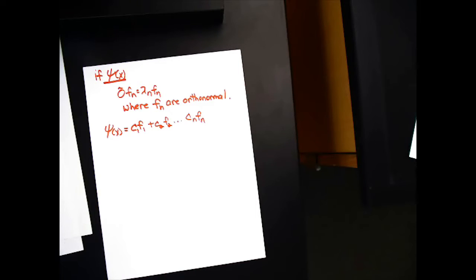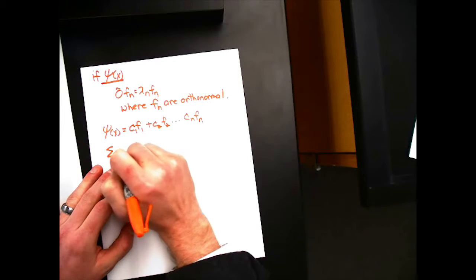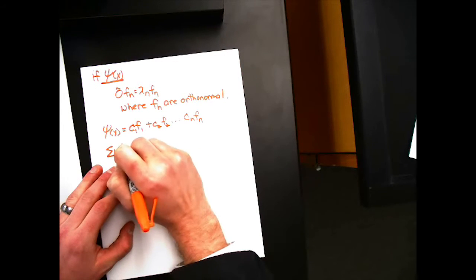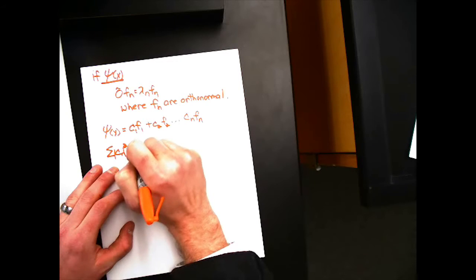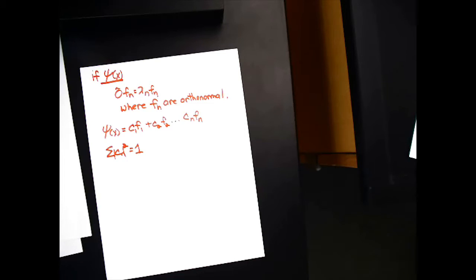There are two things to point out about this. One, the sum of all c sub n magnitude squared is equal to one. And that comes from having to have a normalized wave function to make a valid probability distribution.